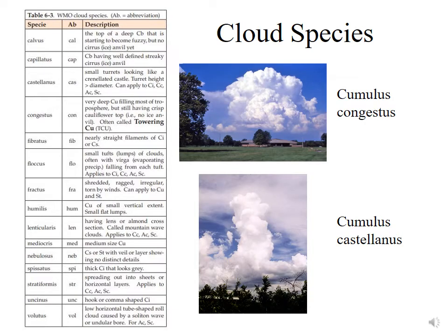Here we have an example of a cumulus congestus cloud. A cumulus congestus is a very deep cumulus cloud filling most of the troposphere, but still having a crisp cauliflower-like top. That means there's no ice at the very top of this cloud yet — if the cloud had ice, it would have a diffuse, fuzzy appearance as opposed to very distinct cloud edges. These are often referred to as towering cumulus clouds.